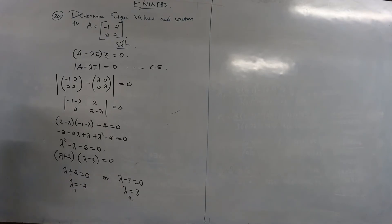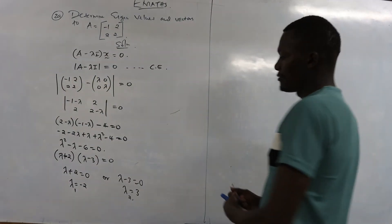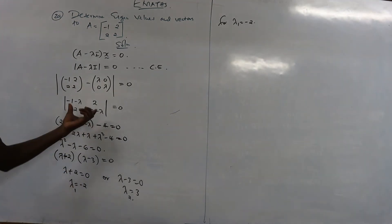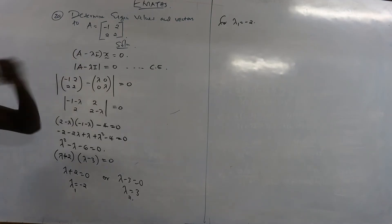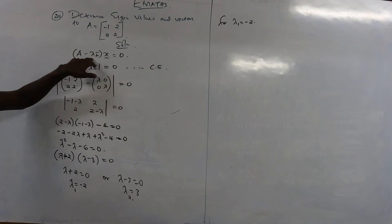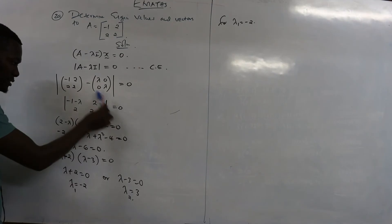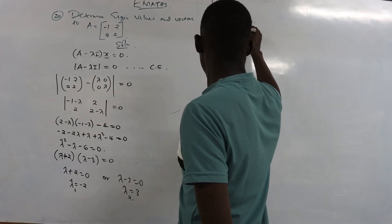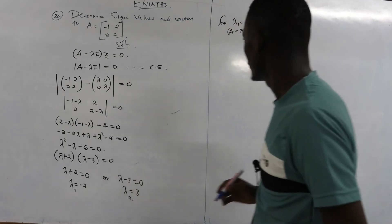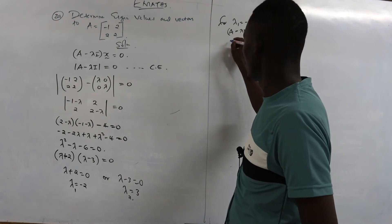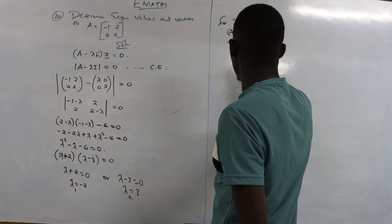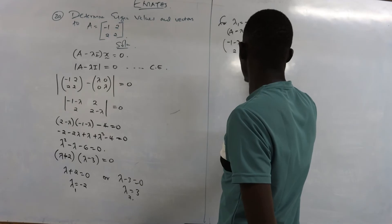Now we calculate the eigenvectors corresponding to each eigenvalue. Starting with lambda one equals negative two. We use the equation: A minus lambda I times x equals zero. We already know A minus lambda I, so we substitute lambda equals negative two. The matrix becomes: negative one minus negative two gives one, then two, two, and two minus negative two gives four. With vector x1, x2 equal to zero, zero.